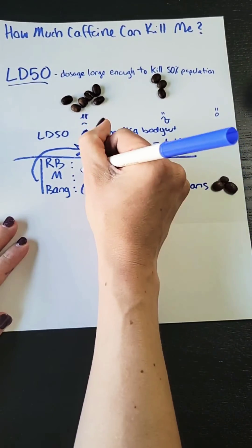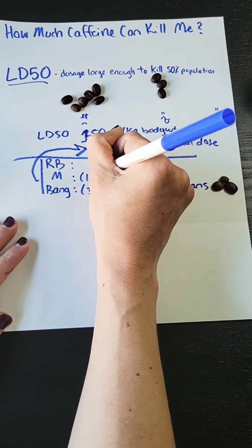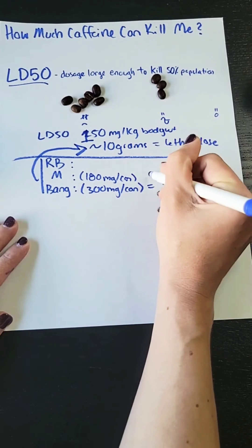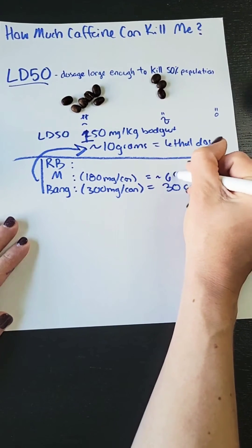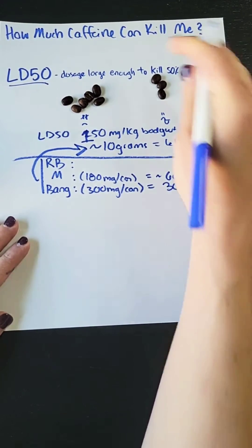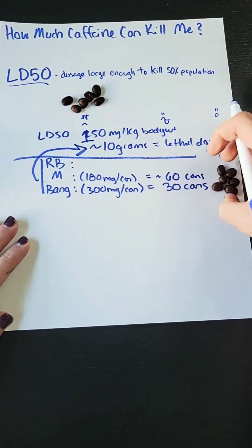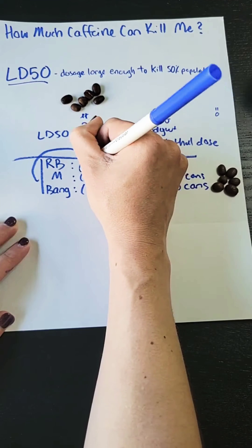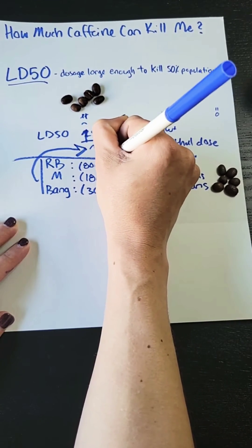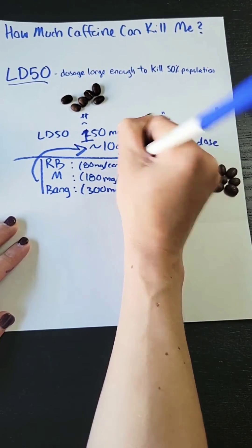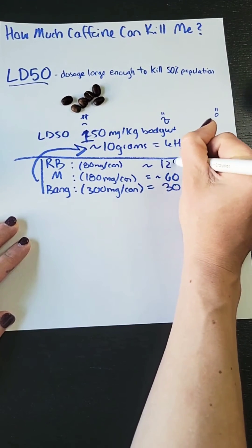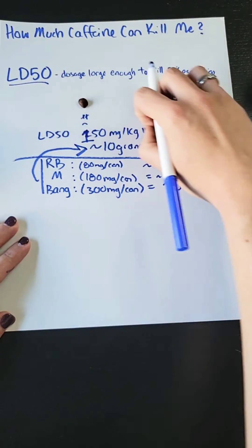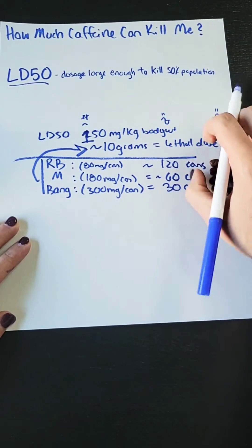With Monster, most flavors have about 180 milligrams per can, so it takes about 60 cans. And Red Bull, the most feared of all, because it only has about 80 milligrams per can, it would actually take around 120 cans.